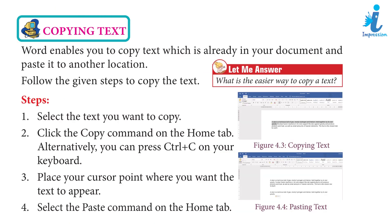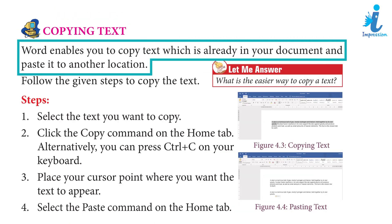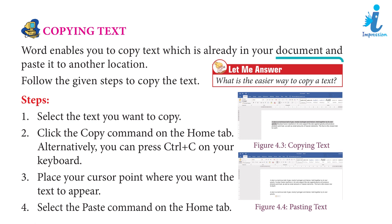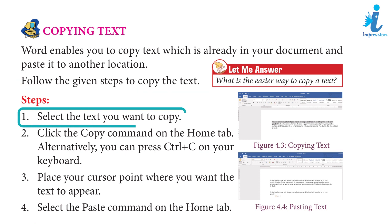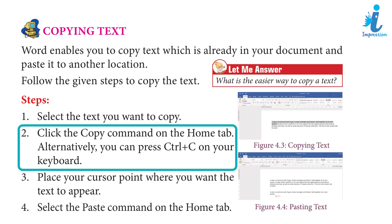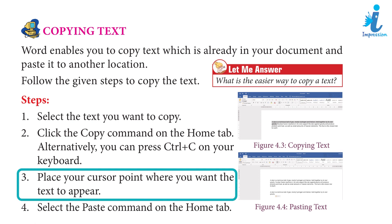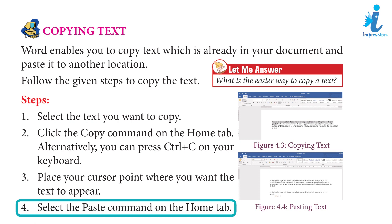Copying Text: Word enables you to copy text which is already in your document and paste it to another location. Follow the given steps to copy the text. Step 1: Select the text you want to copy. Step 2: Click the Copy command on the Home tab. Alternatively, you can press Ctrl+C on your keyboard. Step 3: Place your cursor at the point where you want the text to appear. Step 4: Select the Paste command on the Home tab.